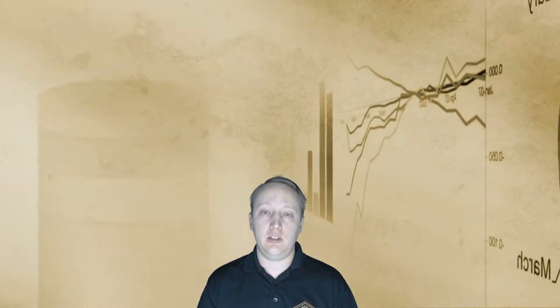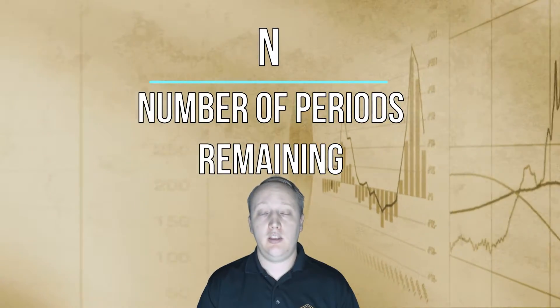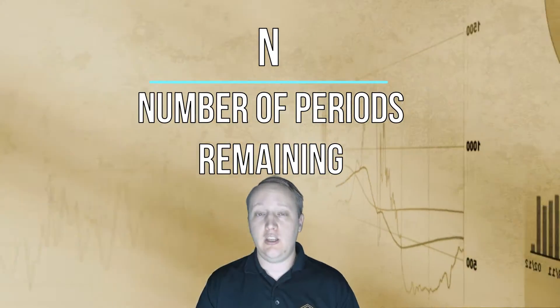You're going to have the N, which is the number of months. That's what we'll want to use. Again, you can change that, but N is basically the term of the loan or the amount of payments you should be receiving.